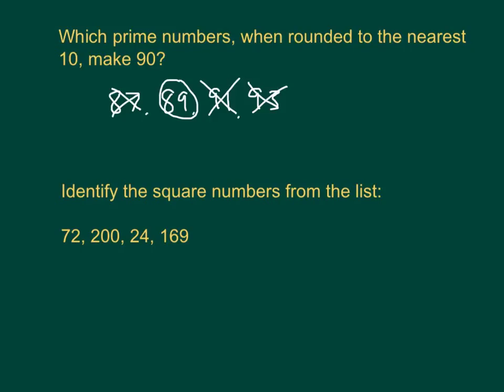For the bottom question, I'd be checking the square numbers above or below that number. So for example, 8 times 8 is 64, 9 times 9 is 81, so it can't be 72. By a similar logic, 14 squared is 196, so 200 can't be. 24 we know isn't on a similar logic, but 169 is as it's 13 squared.